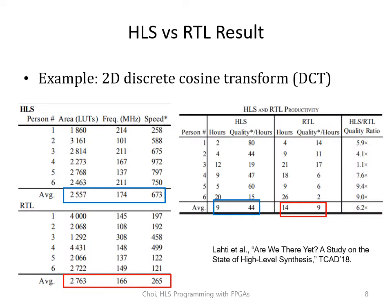Some of you might be worried that the performance of HLS might not be as good as Verilog coding. This is no longer true with modern HLS compilers. In this comparative study on DCT, programmers using HLS typically used a similar amount of area or resource, and were able to run it more than two times faster. HLS programmers also needed only two thirds of the development time compared to RTL development.